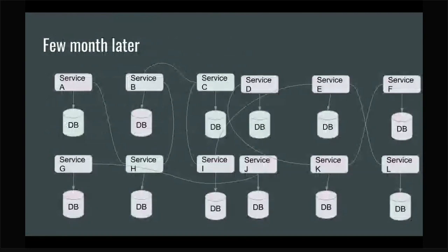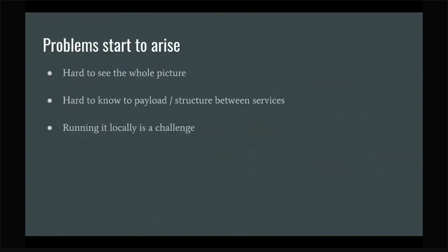As developers, we're used to having problems. We're used to seeing complex diagrams, but we need to see that we can solve them. So let's try to break down the problems. The very first problem is it's hard to understand the bigger picture now. From two services and a few arrows between them, we now have 12 with many arrows going in many directions. It's our job as developers to see the whole picture and understand which API calls are invoked when a user clicks a button.